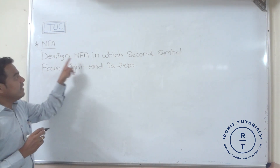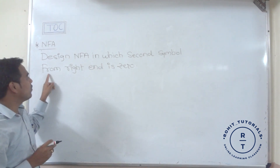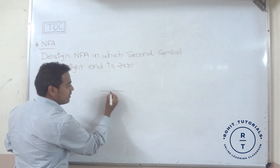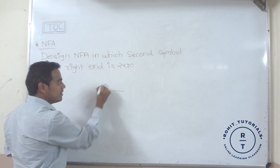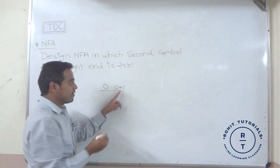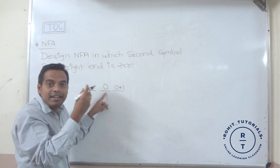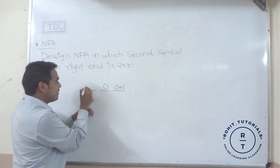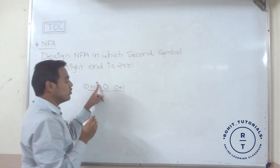The problem statement is: design a non-deterministic finite automata in which the second symbol from the right end is zero. The right end is the last symbol, and the second last symbol is always zero. After that, either zero or one is present — that is represented as one. Before this zero, any number of zeros or ones are present, represented as (zero plus one) star — this is the closure property.